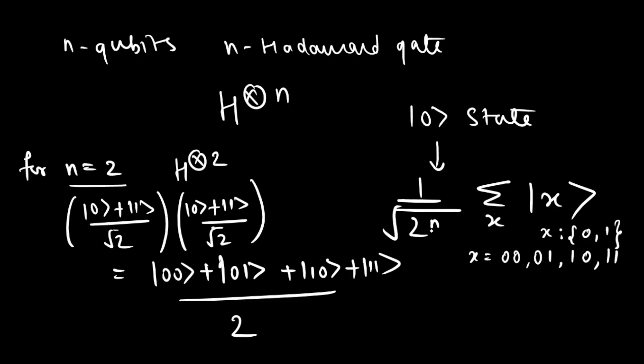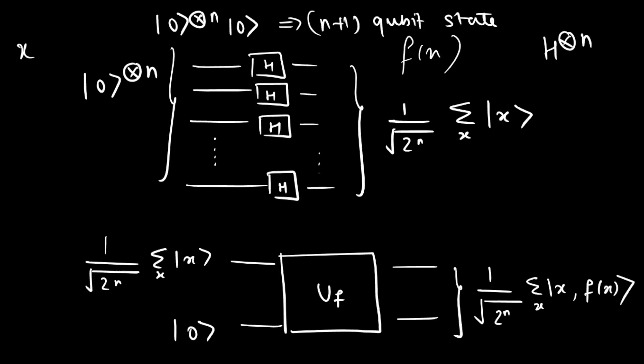And so putting all this value of x in this equation and putting the value of n equal to 2 will get 1/2 summing over all this values of x which would eventually give us this final result.